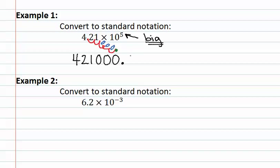Let's convert the next example. In this next example, we can see that the exponent is negative. Remember, this means that we will have a small number in standard notation. Let's move the decimal. If I move to the right, I would be getting a bigger number. I would like a smaller number, so I need to move it three places to the left.